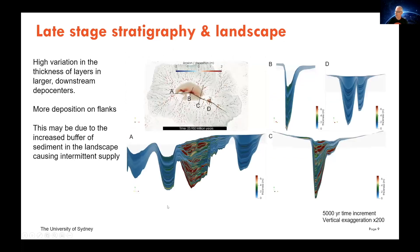In the late stage, the thing that stands out is that we're seeing much thicker layers being deposited. Axial deposition is still present, and there's much greater variability in these deposited layers, suggesting that there's potentially much greater variability in how the sediment is supplied to the basin.